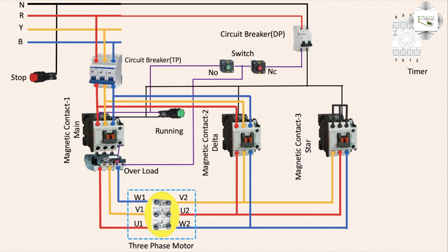NC outlet to overload — means overload automatically switches motor on/off for over-current or over-torque protection. Magnetic contact ANO connection to coil connection — normally open magnetic contact ANO contact coil connection.